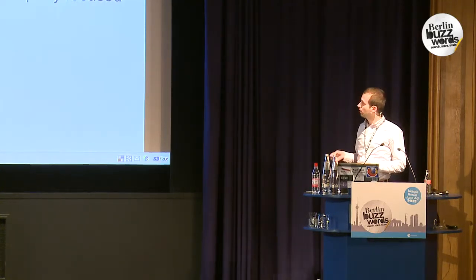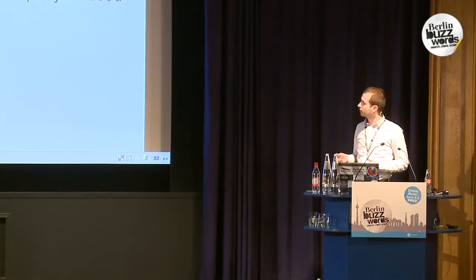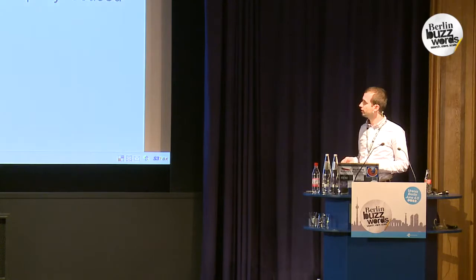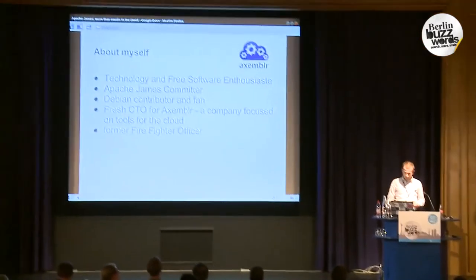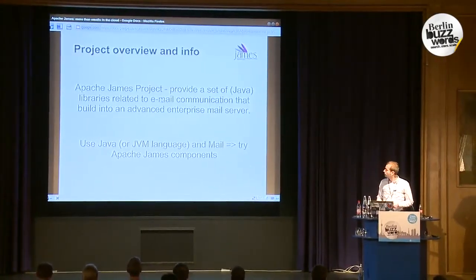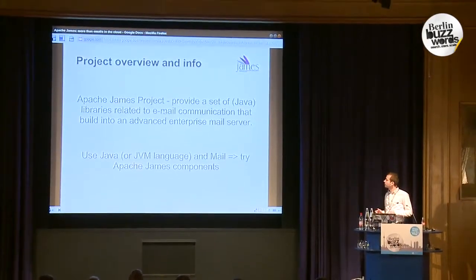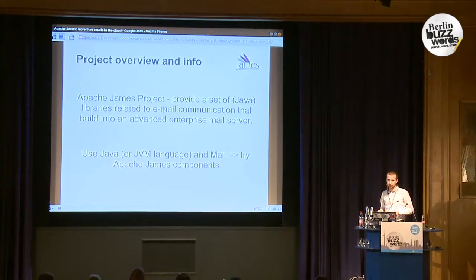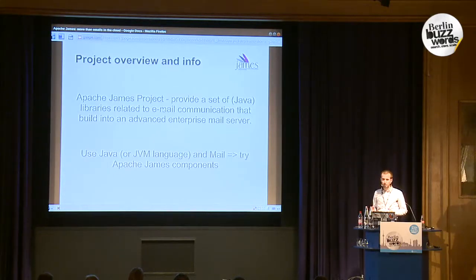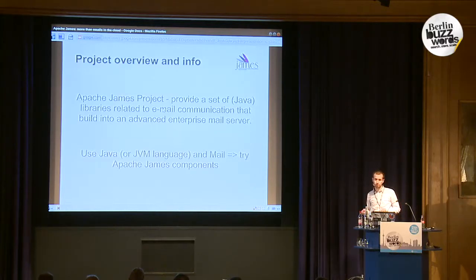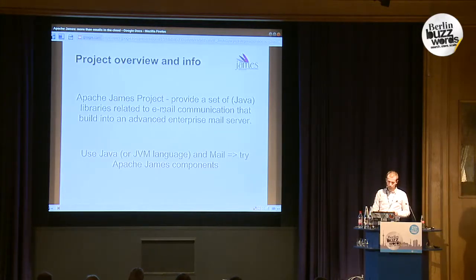I love Debian. I'm a fresh CTO of Accambler — a new company focused on developing tools for the cloud. And I'm also a former firefighter officer. So in this talk, James is a set of libraries that help you work with email. If you use Java or other JVM languages and have problems with email, then try out the James project.